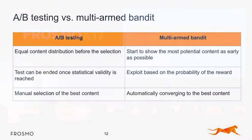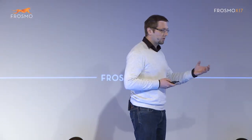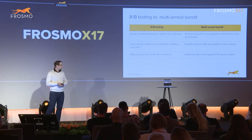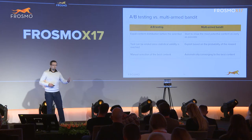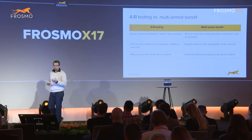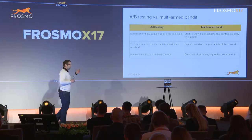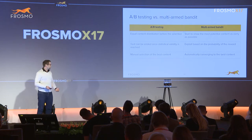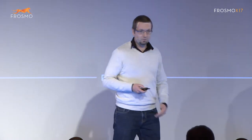Here's a comparison between A/B testing and multi-armed bandit. A/B testing starts with equal content distribution — you show each piece of content equally to all people — and then you end the test once you have statistical validity and manually select the best one. With multi-armed bandit, once you put it live, you can quickly start showing the most potential content as early as possible. It's based on probabilities — the content with higher probability of reward gets shown more — and it automatically converges to the best content without any manual selection.